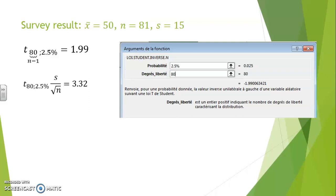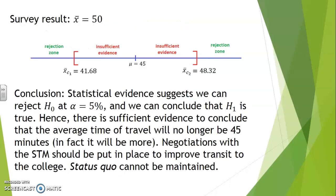If we multiply this value of T with S over root of n, we'll get 3.32. And so the left critical sample mean is 3.32 units left of 45, which is 41.68, and the right critical number is 48.32. In other words, 41.68 and 48.32 delimit the beginning of each rejection zone. Our sample result, our sample mean, was 50, which is to the right of the border delimited by X bar C2. We are in the right rejection zone.